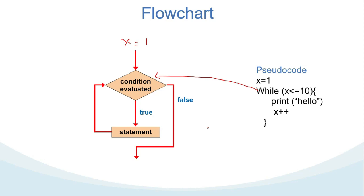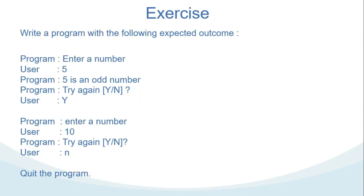An important point about the while loop: sometimes it may not even execute. This is because the condition to be tested is at the beginning. Therefore if the condition results in false, the loop body is skipped and the first statement after the while loop will be executed.